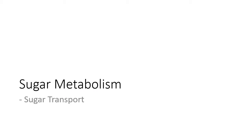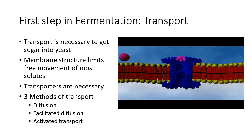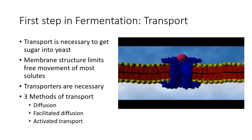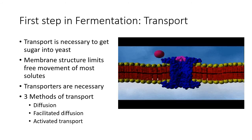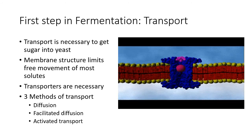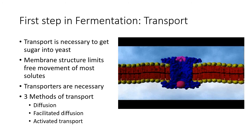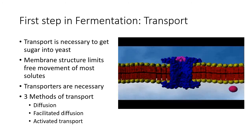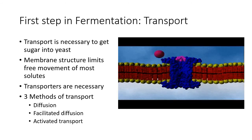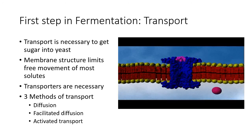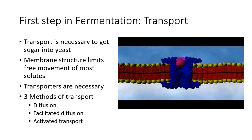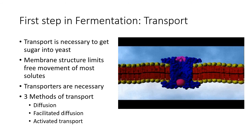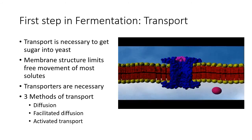Let's talk about sugar metabolism and the first steps in fermentation. What are yeasts trying to do? The primary question is: how do yeast get sugar into their cell? Their cell membrane is a tightly knit layer of fatty acids, mainly cholesterol and ergosterol. They need little 'mouths' — transporters — to pull sugar in, because that membrane structure limits the free movement of most solutes.